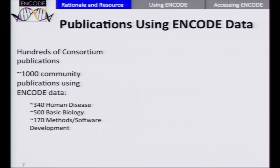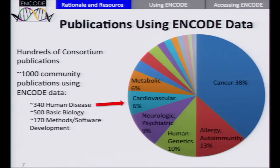In terms of publications, in addition to hundreds of publications from the consortium, there are at least a thousand publications that have come from what we call the community — people outside of ENCODE who don't receive ENCODE funding yet are using the data in their publications. About a third of these publications are studies of human disease, which attests to the high translational value of the resource. A large number of disorders are being studied using ENCODE: cancer, allergy, autoimmunity, inflammatory disorders, and neurologic and psychiatric disorders are high on that list.